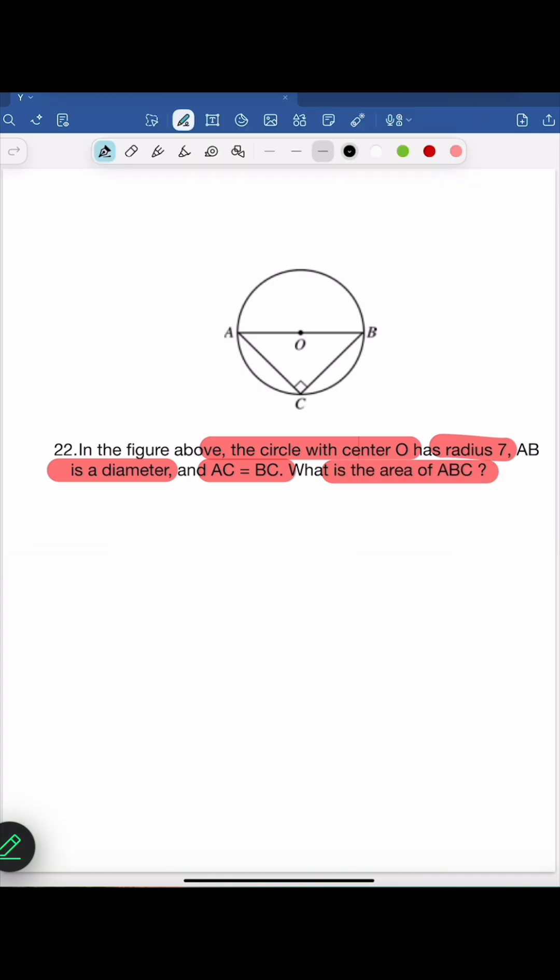In the question, it is given radius of the circle R is equals to 7. We know AB is the diameter. A diameter is 2 times the radius. So it is equals to 14.